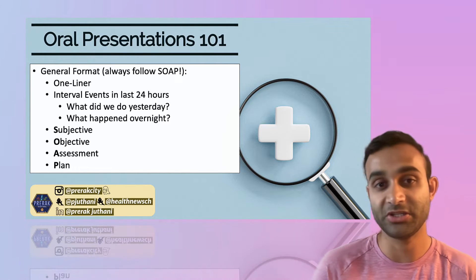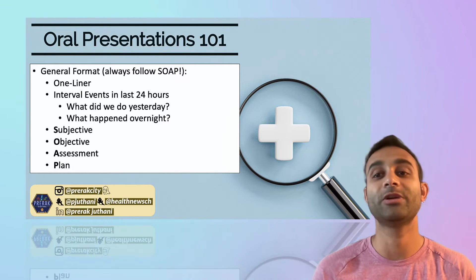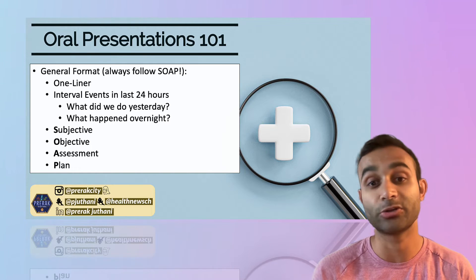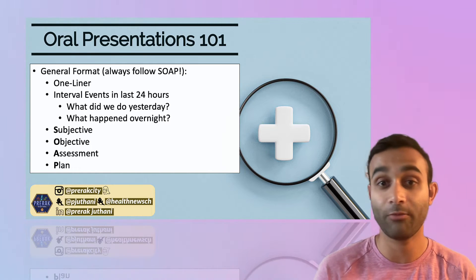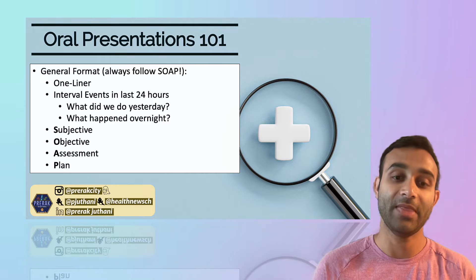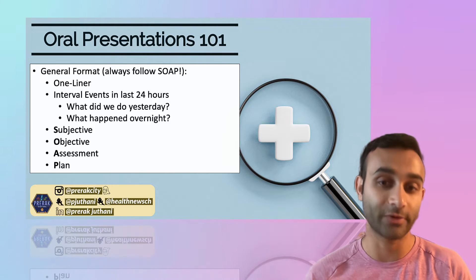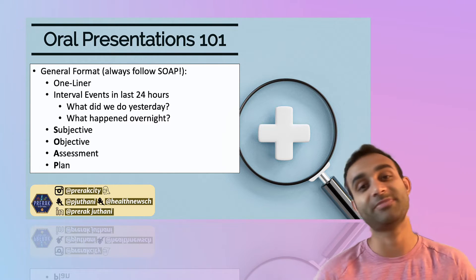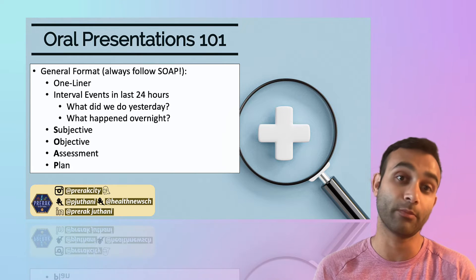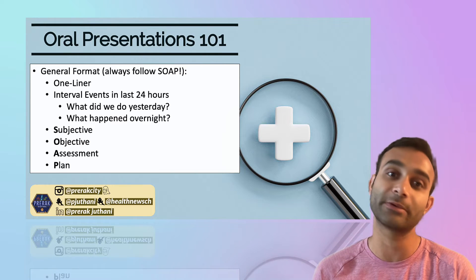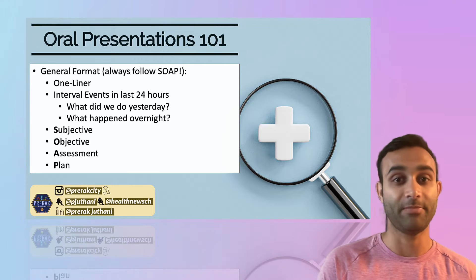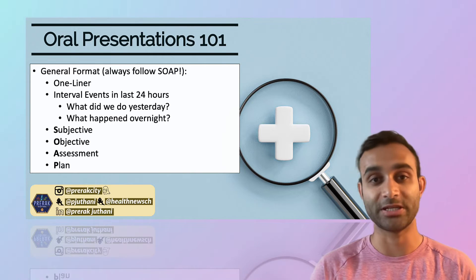Then you can usually go into interval events — what did we do to this patient yesterday in terms of big treatments, what did we opt to do, did we consult any services, and did anything happen to the patient overnight? You're assuming the patient has been in the hospital for a while, so interval events are important because you always want to remind everyone what happened yesterday before you get into what you're thinking about doing today.